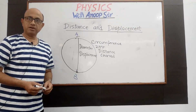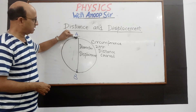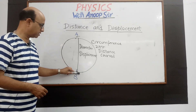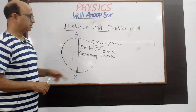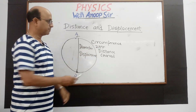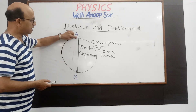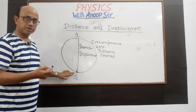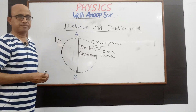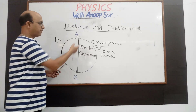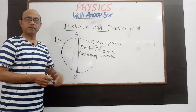Now we take another example involving circular path motion. एक person point A से चलना शुरू करता है और circular track पर चक्कर लगाता हुआ वापस A तक आ जाता है। Distance covered will be the circumference — 2πr. अगर A से B तक आता है तो distance covered होगा πr, circumference का half. अगर वो 5 चक्कर लगा रहा है तो total distance covered होगा 5 × 2πr.